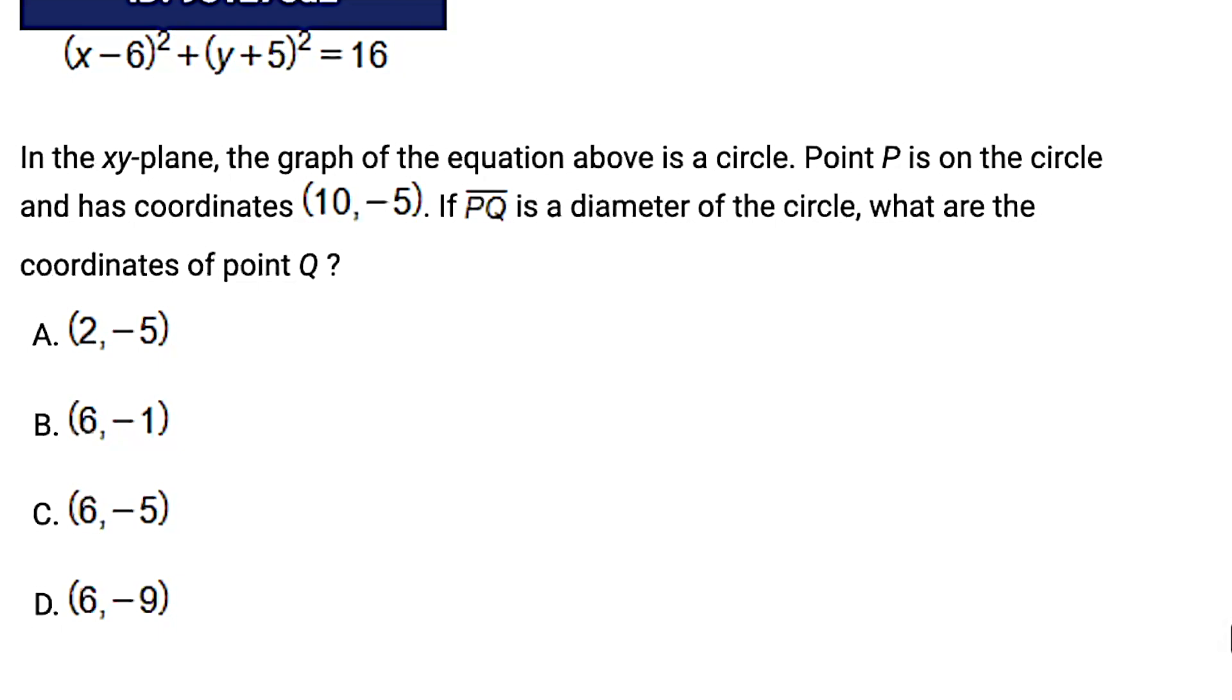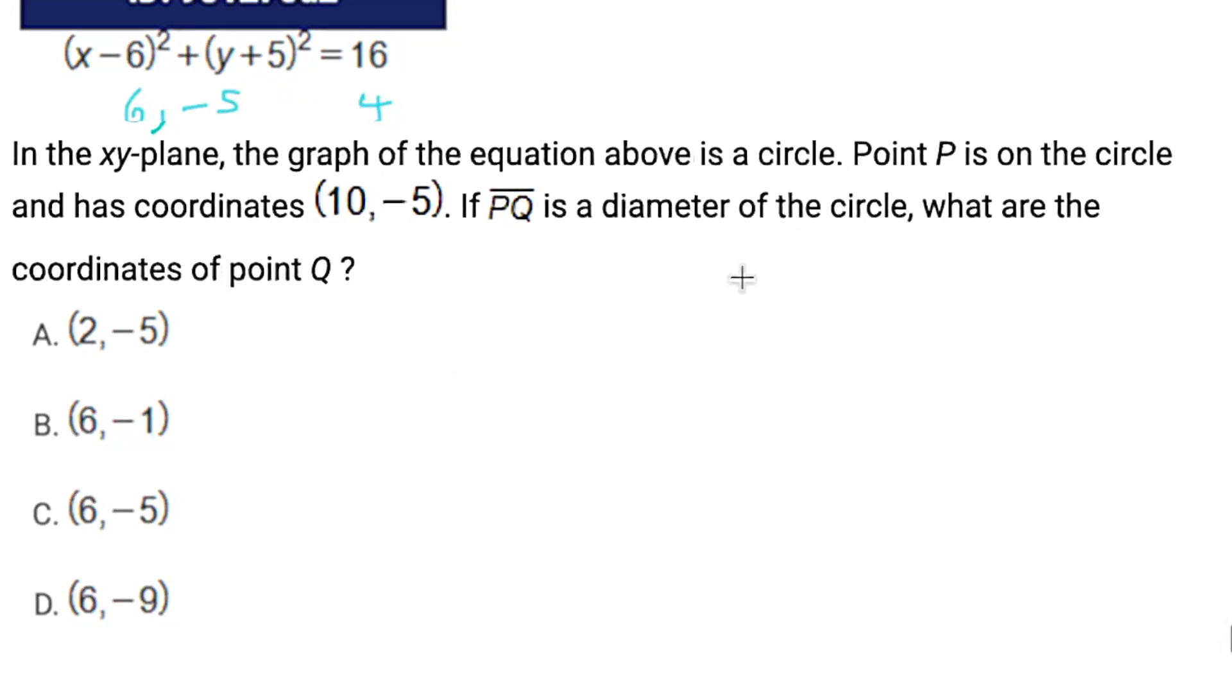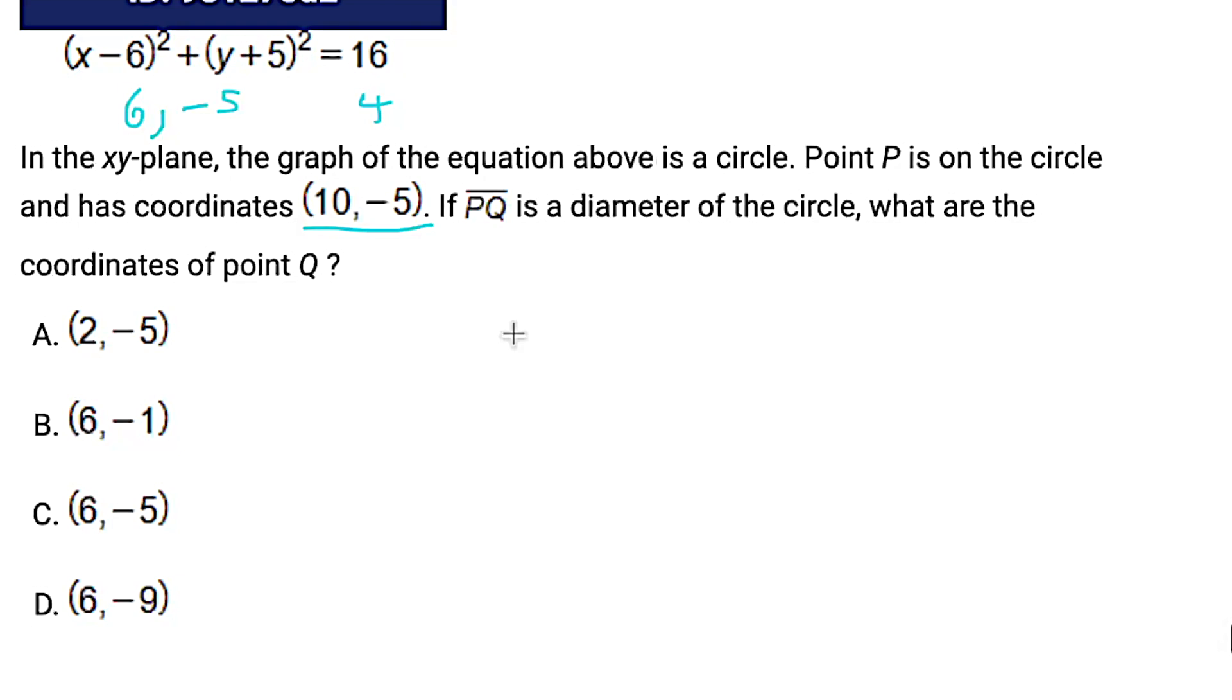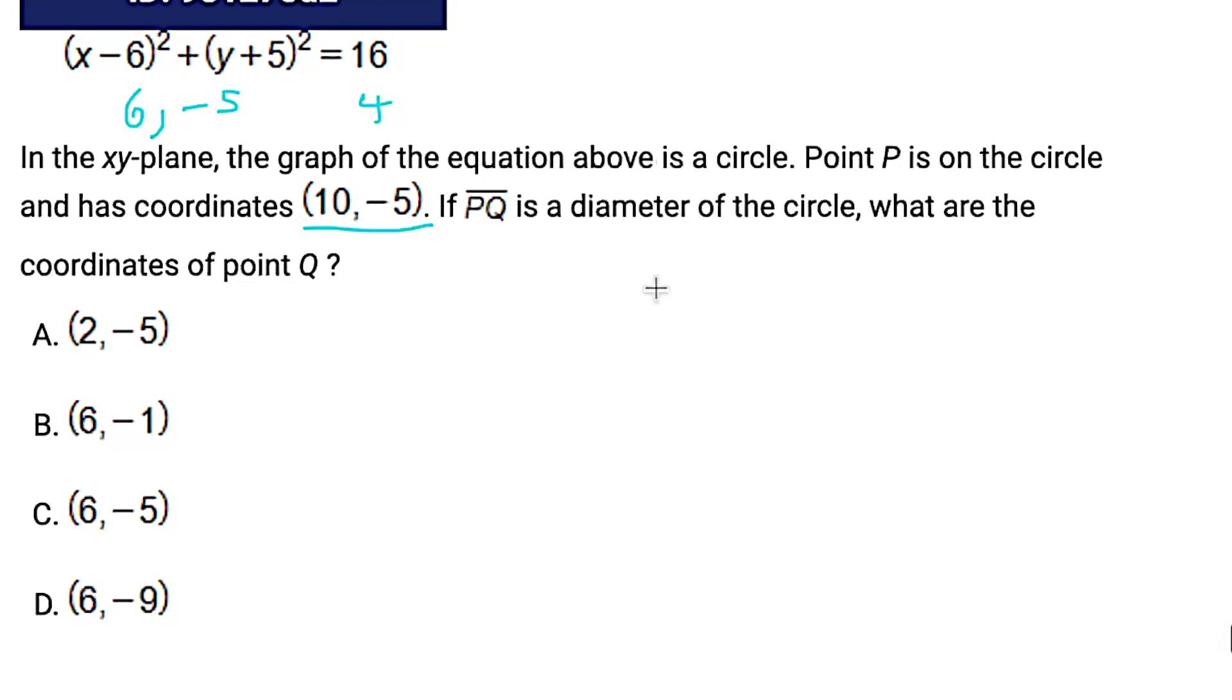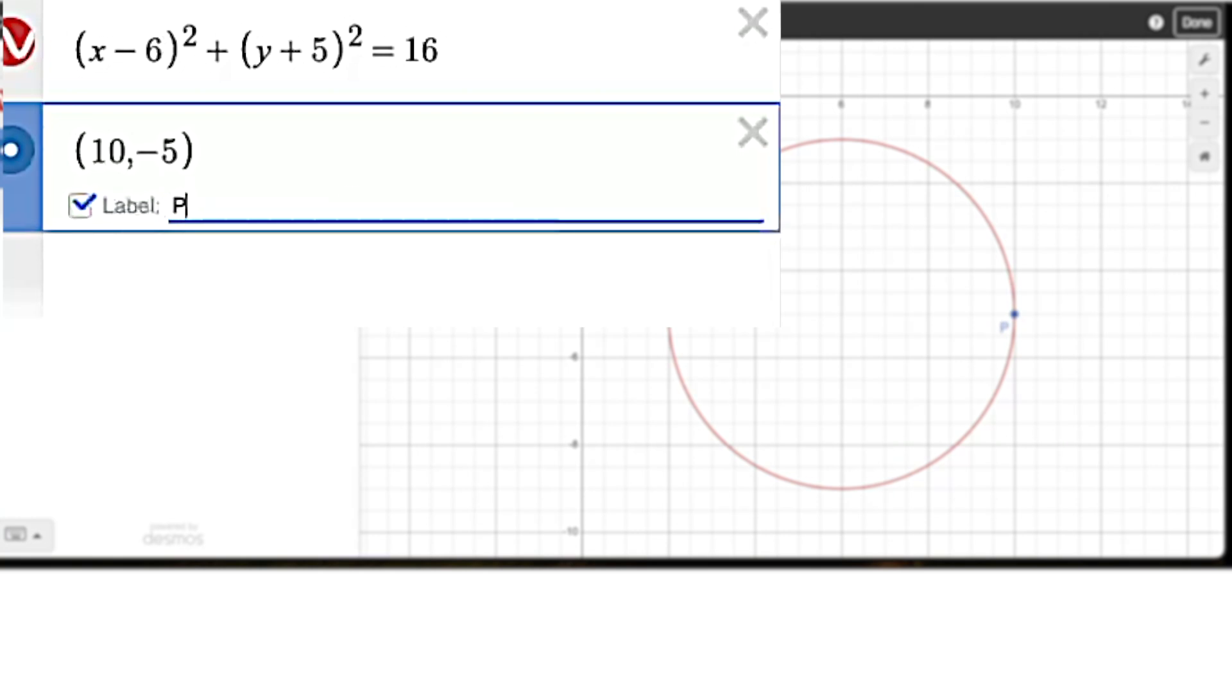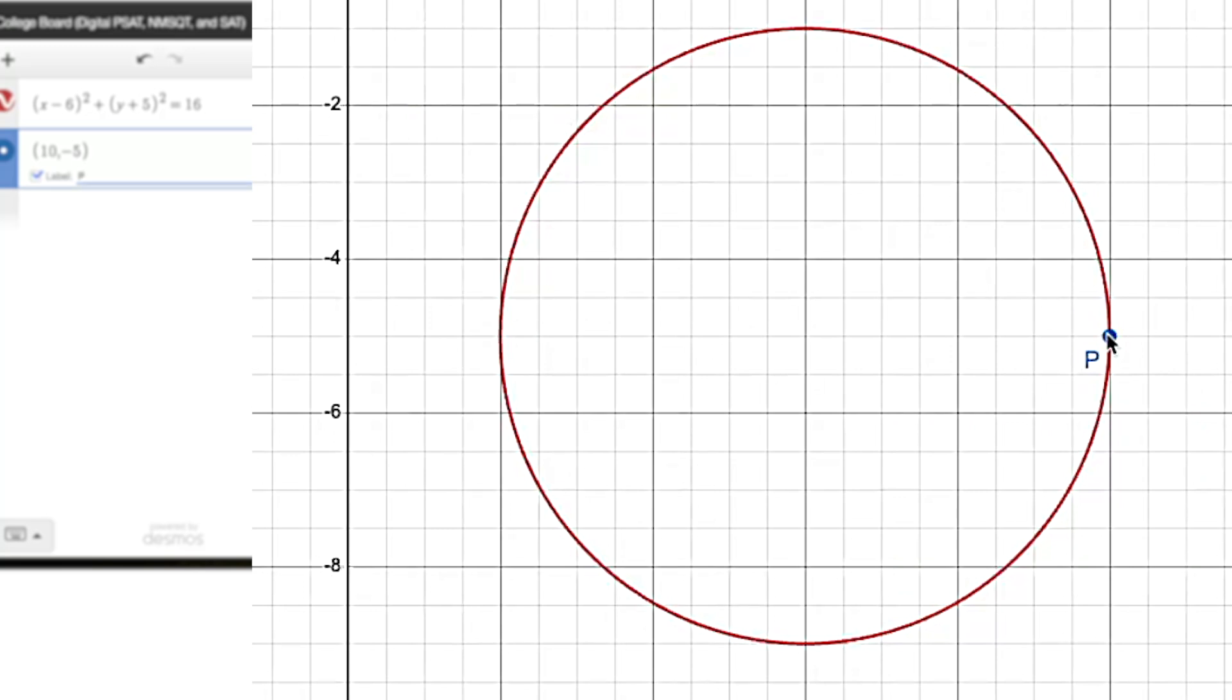Our first hard question here is also a circle question, and it gives us the equation. We know that the radius is going to be 4, because 4 squared is 16. We know that the center of the circle is 6, comma, negative 5. It's telling us that there's a point on the circle, and it's telling us that pq is a diameter of the circle. I'm immediately thinking we could use the distance formula, maybe the midpoint formula. But because we have Desmos, let's just visualize things with Desmos real quick and see if that gives us bearings. Here's the circle that I just plugged in, and let's plug in that point they gave us as well. That was 10, negative 5. So that's our p.